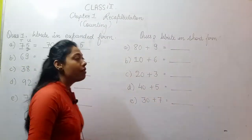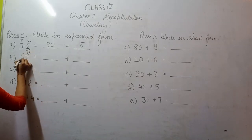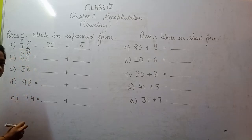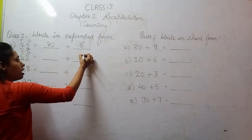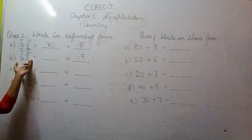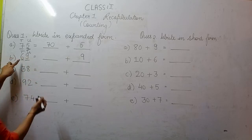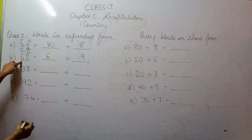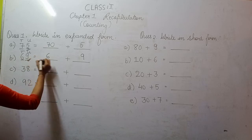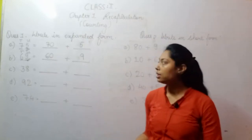Similarly, when we talk about 69 — in 69, the 9 is at the units place and 6 is at the 10s place. So first we will write the unit digit, which is 9. Why have I not added a 0 after 9? Because after 9 there is no digit, and in the unit digit we can never add a 0. Then for the 10s place, the given digit is 6, so I write 6, and after it there is 1 value, so I add a 0 — making it 60 plus 9.